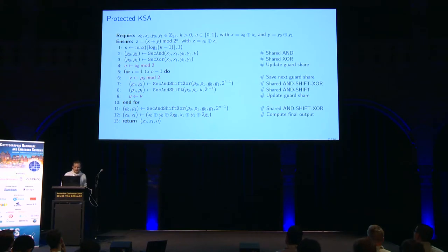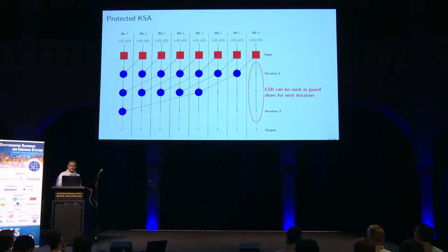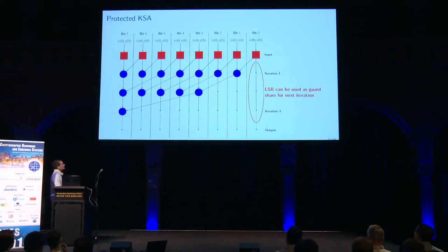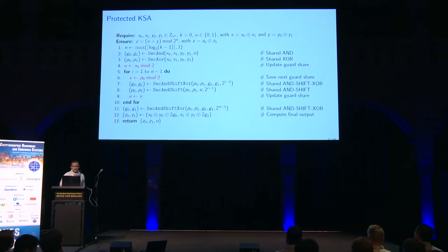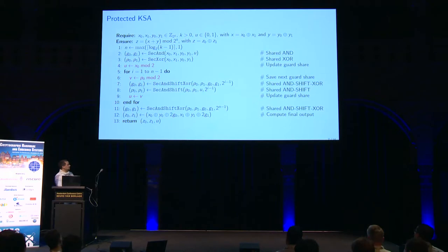To highlight why this works: during the iterations, the first bit is never used, so we can reuse it as a guard share. This allows us to implement a modular addition that requires just a single random bit U for re-masking the entire addition.